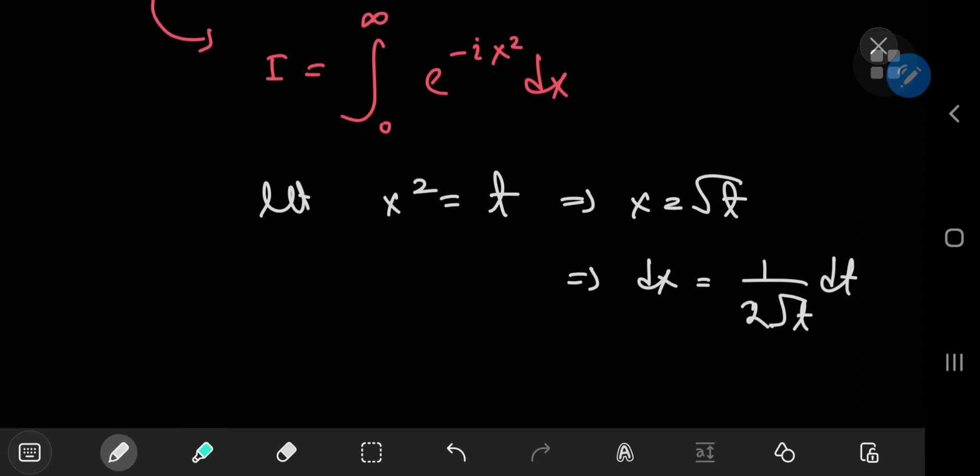Under such circumstances, the limits of integration remain exactly the same. So you now have the integral from zero to infinity of e^(-it), one by two out here, and you have t to the negative one half.